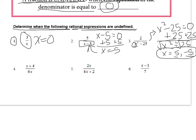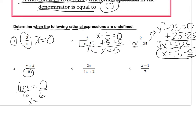This next example has a variable in the top. A lot of students will make the mistake of saying what makes this undefined would be x equals negative 4. But like I said before, it doesn't matter what's in the top of a fraction. It's only the bottom you need to consider when dealing with undefined fractions. In the bottom of this fraction we have 6 times x. Set 6x equal to 0, divide by 6 on both sides — it's okay to have a 0 in the top of a fraction, so 0 divided by 6 is just 0. So x equals 0 is the number that makes this fraction undefined, because 6 times 0 gives you 0 in the bottom.